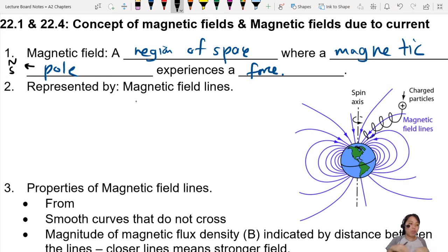So if you put a north pole, south pole magnet into a magnetic field, it will experience a force - attracted, repelled, twisted, whatever that is. So how do we draw magnetic fields? We draw lines, of course.